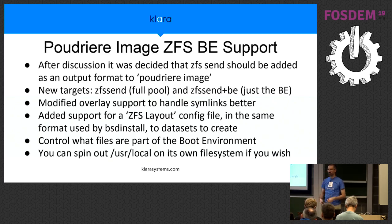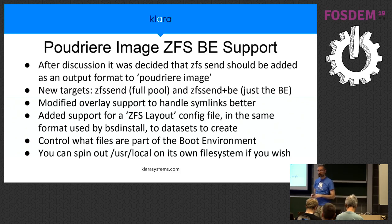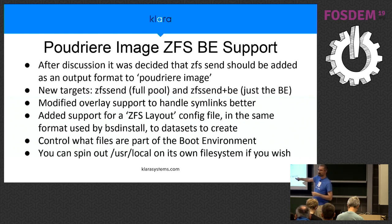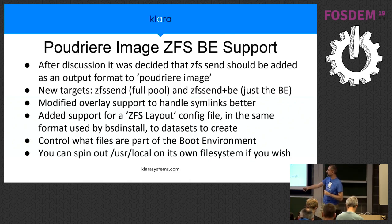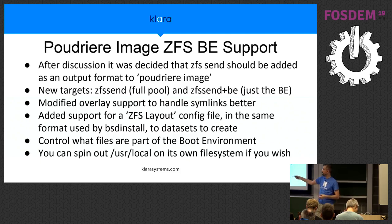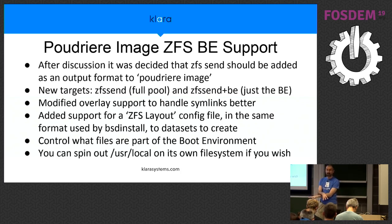I modified the overlay handling so it copies symlinks instead of following them — installing my symlinks in ETC pointing to slash cfg. I added support for defining the ZFS layout via a text file listing the datasets and properties you want. It uses the same format as bsdinstall, so if you've already written a customized script for scripted installs you can copy and paste that. Poudriere Image can also pre-install all the packages you care about as part of the boot environment — if you make usr/local not its own file system, you can feed it the list of 100 packages pre-installed, so when you ZFS receive the upgrade it also upgrades the packages.